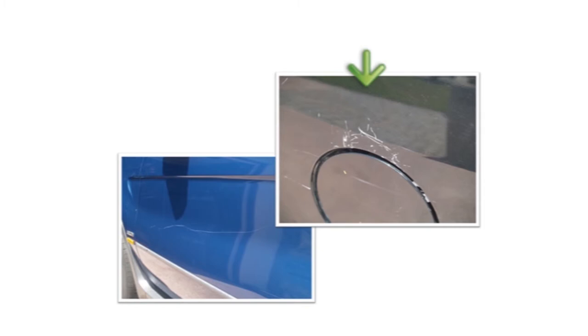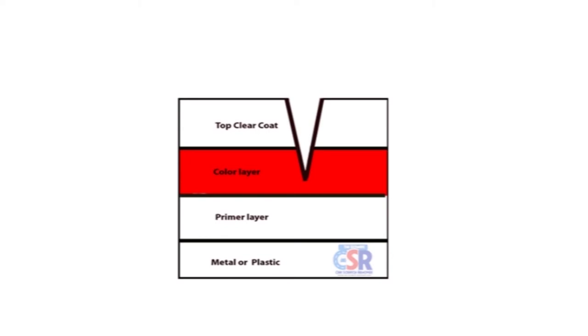So what you have in an extremely deep scratch is the scratch is actually penetrated through the clear coat and into the color layer. Sometimes it can even go to all the way down to the metal or plastic.